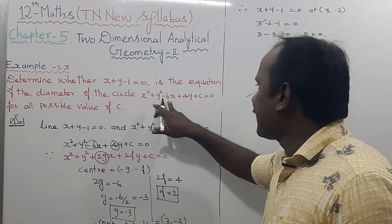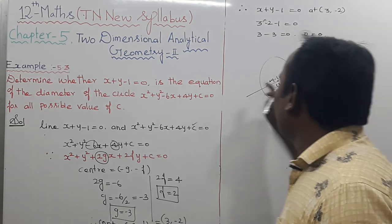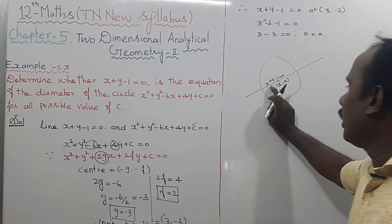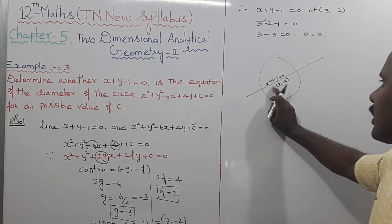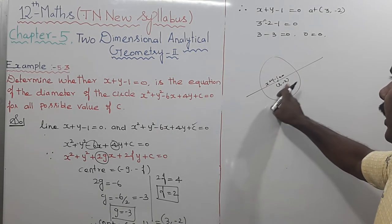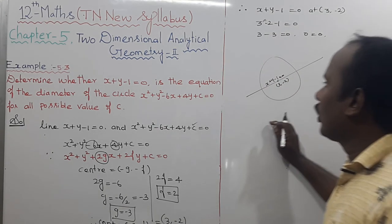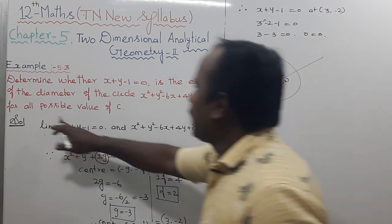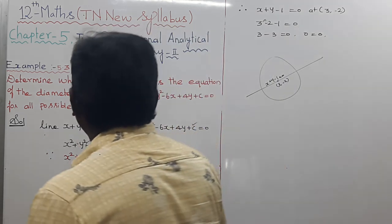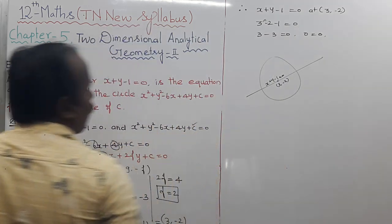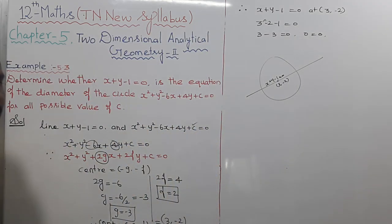Since the center passes through the line, the diameter passes through that point. Therefore, these are the possible values of c.